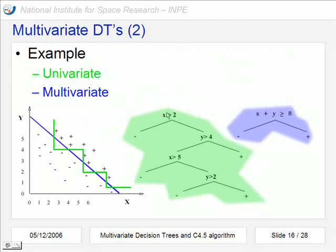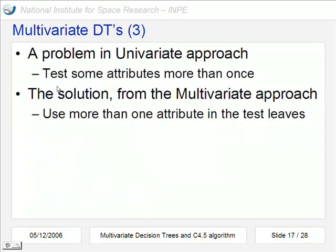A simple example to compare the univariate and multivariate approaches. Here we have a univariate approach that considers just one attribute per node. And results in this tree or this hyperplane as I have already said. And the multivariate approach makes just one test and classifies all the instances. Look, in that example we can find a problem in the univariate approach that it tests some attributes more than once. And the solution from this multivariate approach is that it uses more than one attribute in the test nodes.